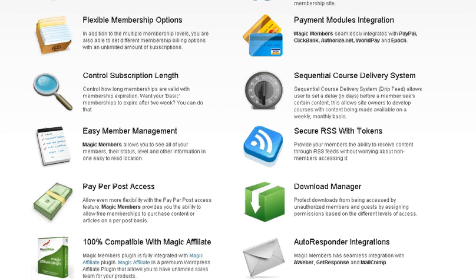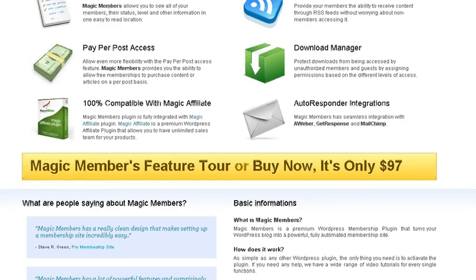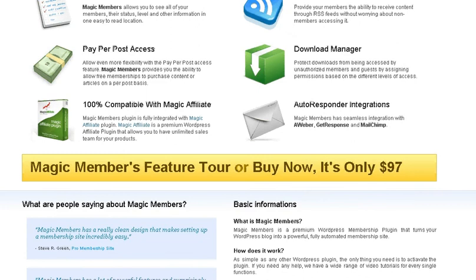The website is magicmembers.com. If they have an affiliate system set up — which I'm assuming they do — I'll post a link next to this video along with the affiliate link to use if you want to purchase. The price is $97, which is good value — I've paid much more for membership systems in the past.